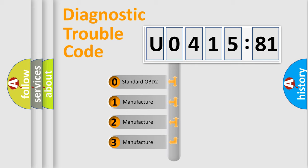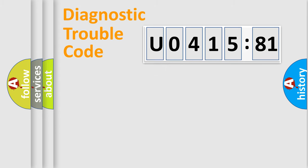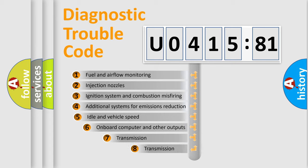If the second character is expressed as zero, it is a standardized error. In the case of numbers 1, 2, 3, it is a more specific expression of the car-specific error.